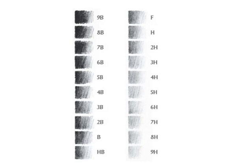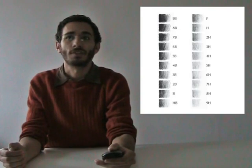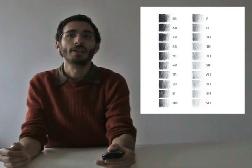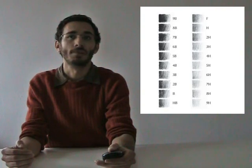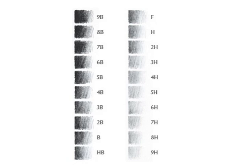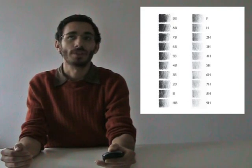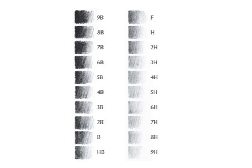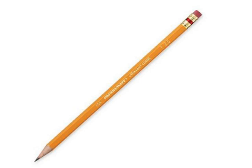The Hs are the lighter end of the scale because they are the harder substance than the Bs. A hard stick of graphite is going to show up lighter because it is physically more difficult to crumble the medium onto the surface of the paper. The Bs, on the other hand, show up much darker because their substance is softer than the Hs. The Bs crumble very easily and are caught readily into the tooth of the paper. On this scale, 9H is the lightest value and 9B is the darkest. The center value, HB, is the hardness used in standard No. 2 writing pencils.